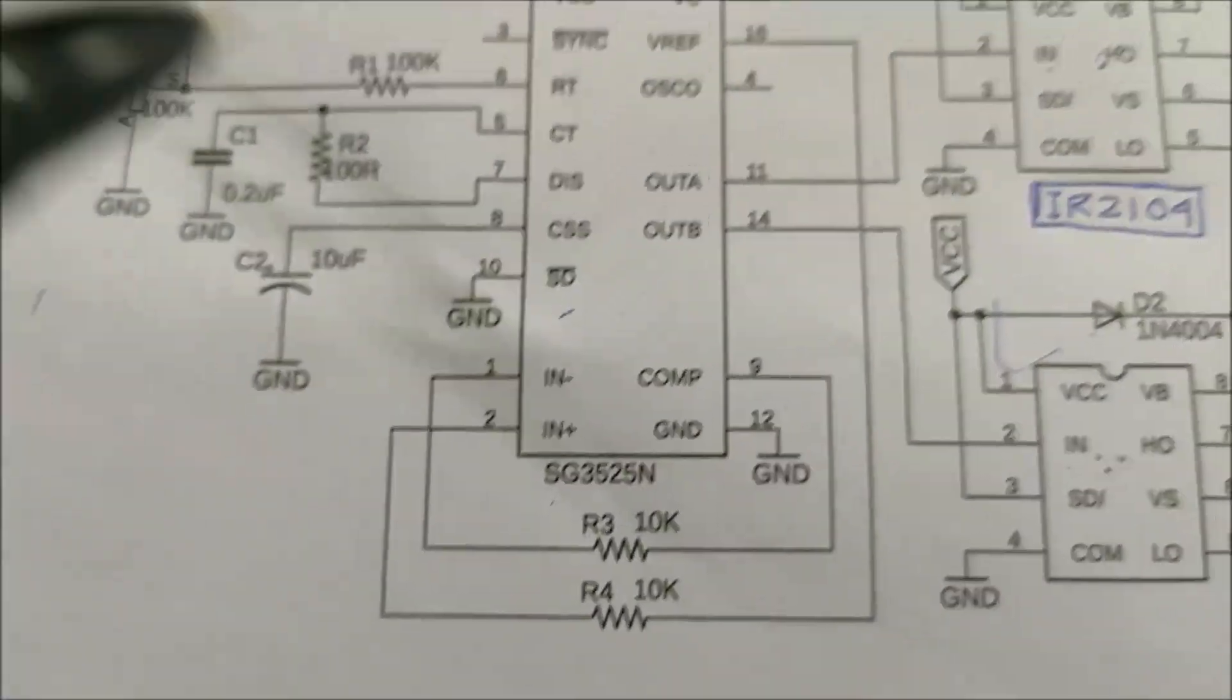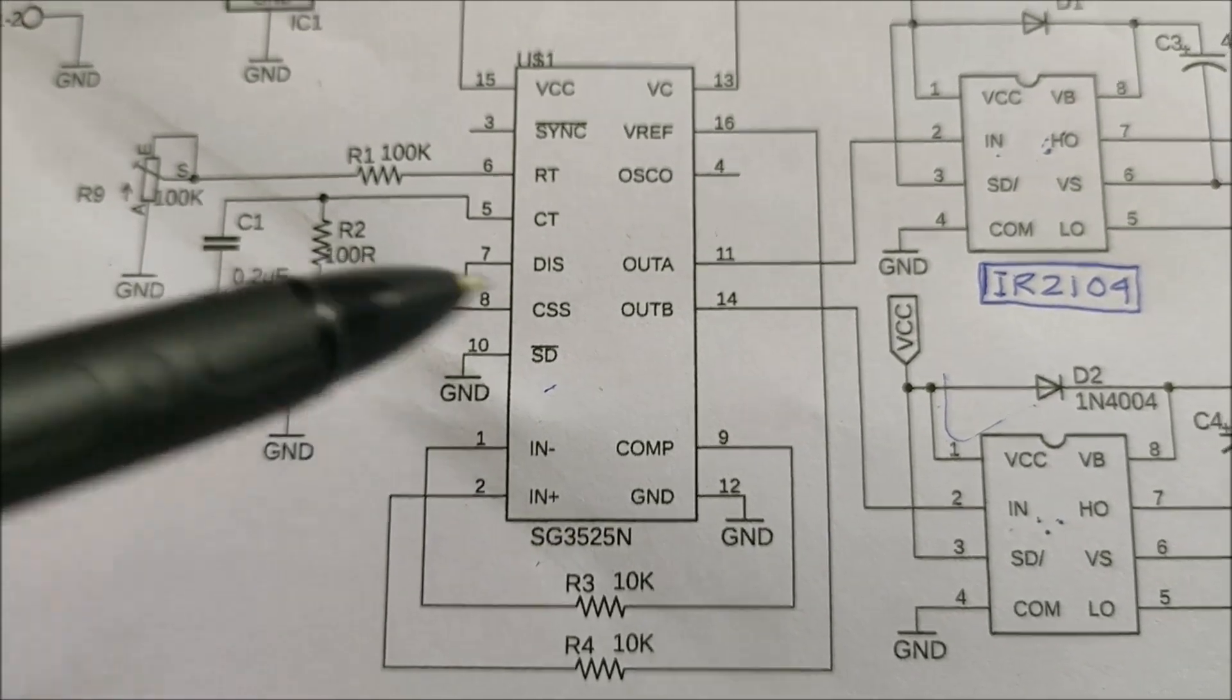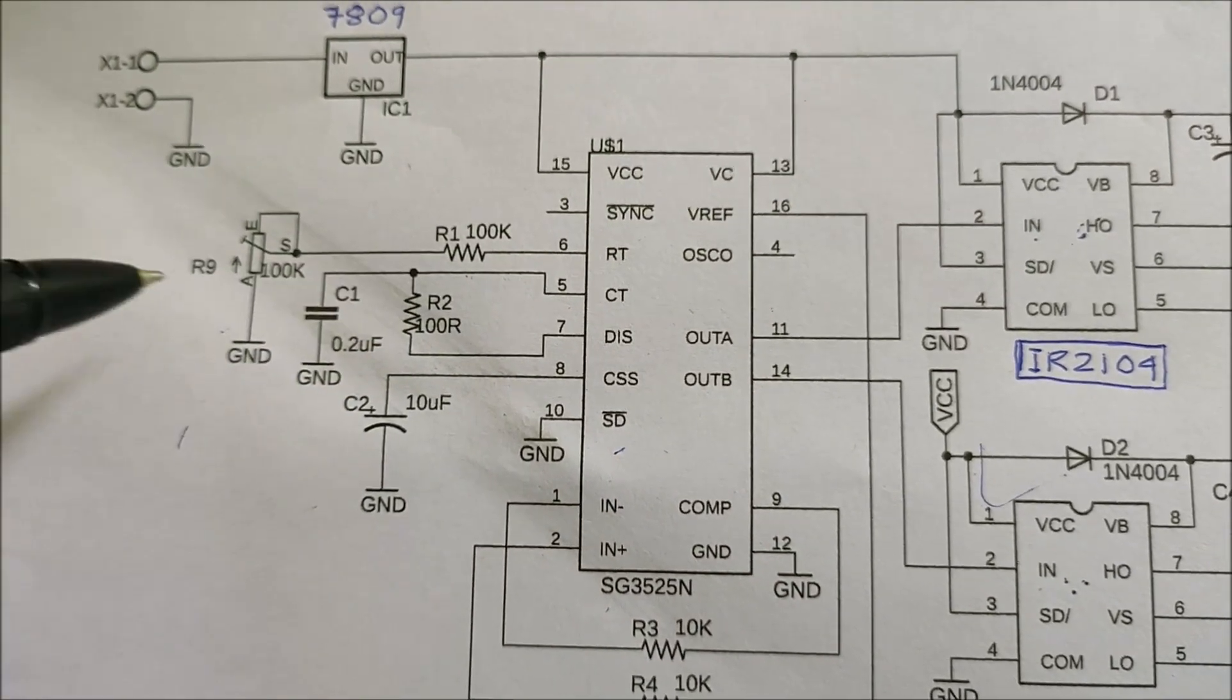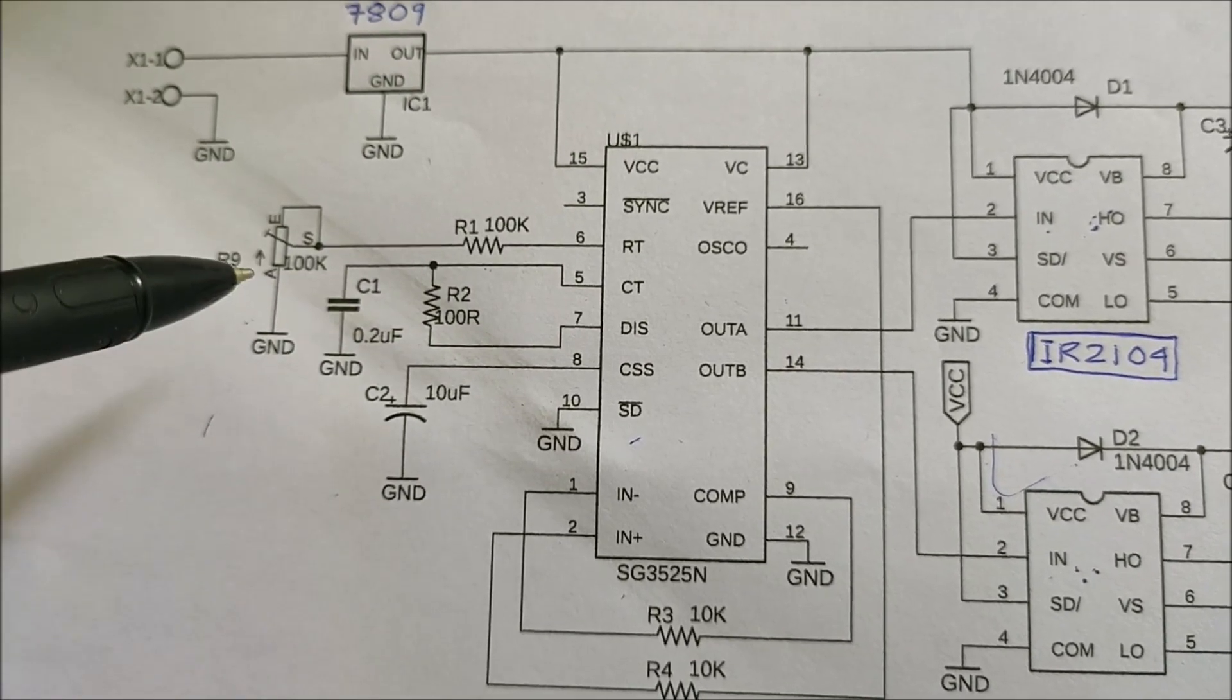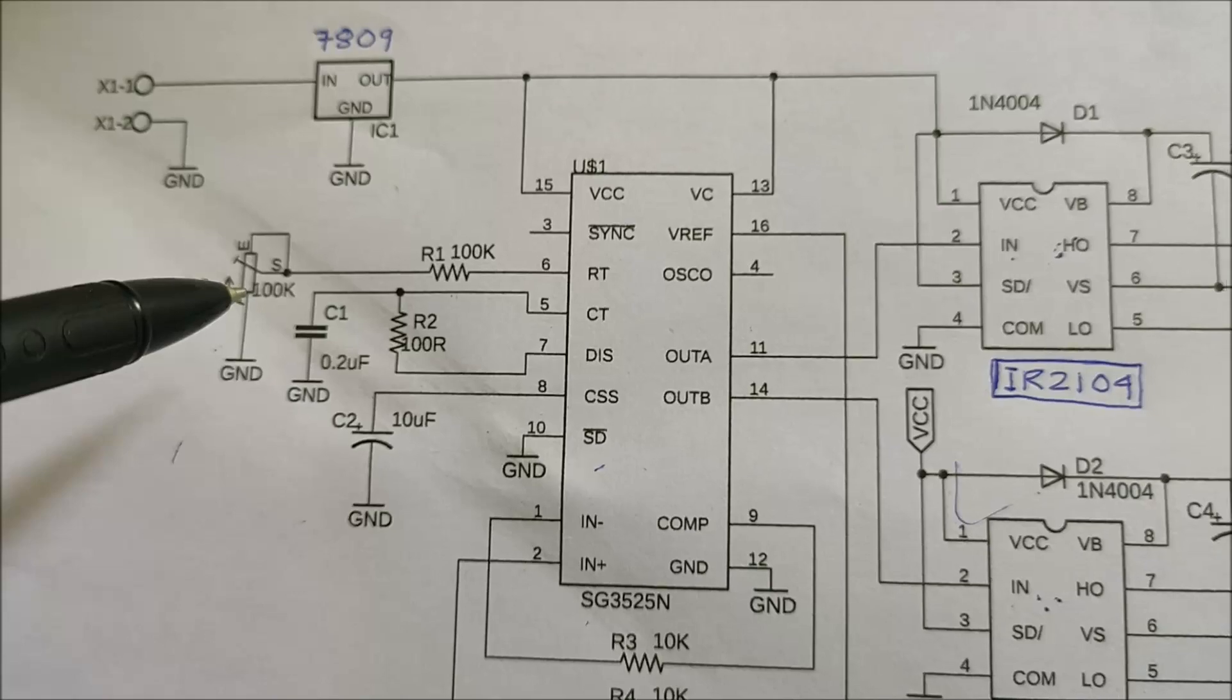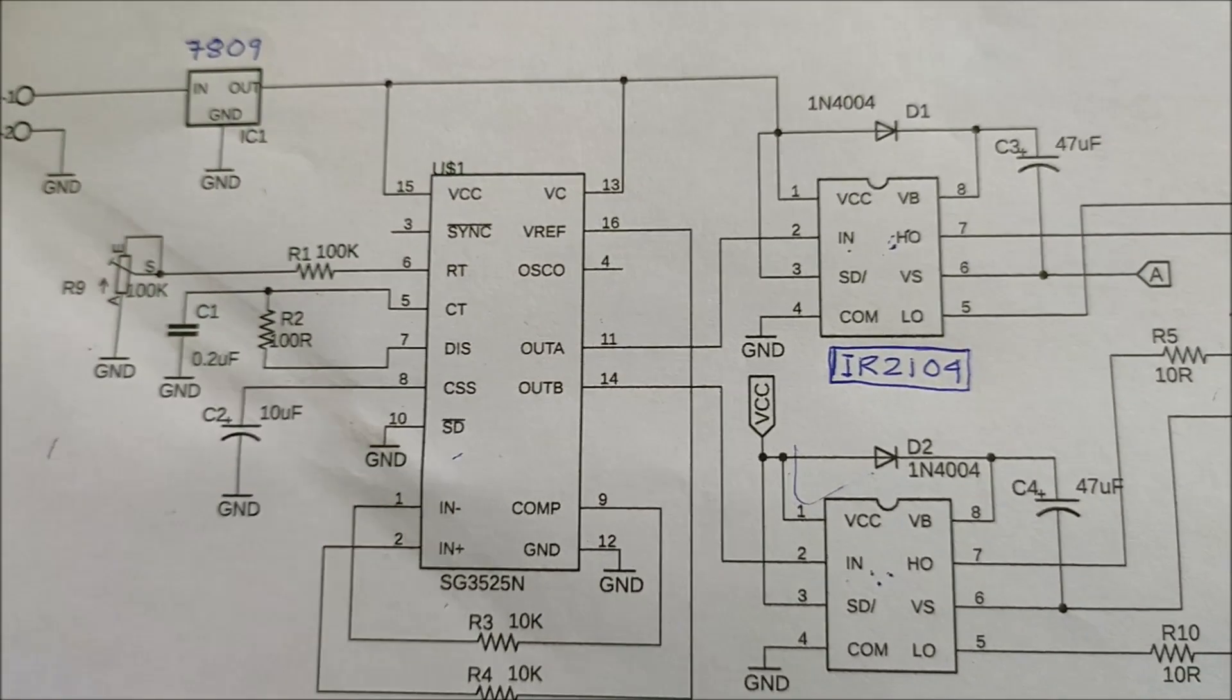Let us have a look at the circuit diagram for the project. The SG3525 is configured as a 50Hz oscillator. The frequency is being determined by this resistance R1, a variable resistance R9 and a capacitor C1. The variable resistance R9 is used to fine tune the frequency to 50Hz. The output of the SG3525 can be obtained from pins 11 and 14.